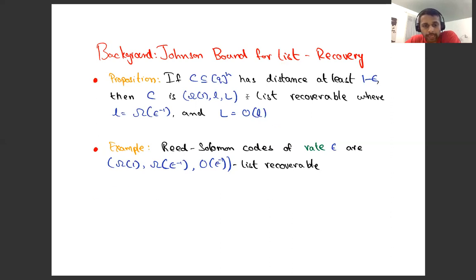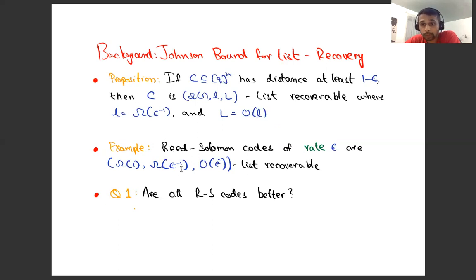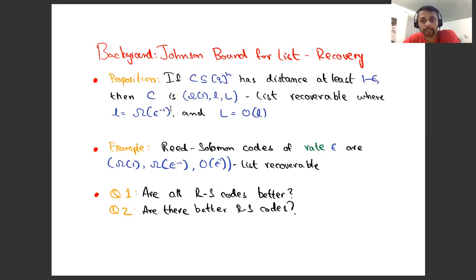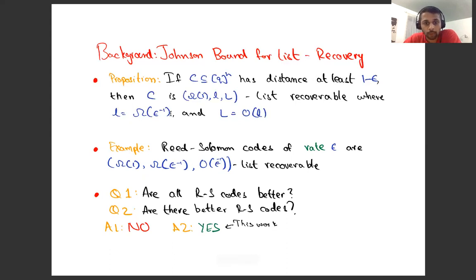Reed-Solomon codes have a lot of algebraic structure beyond what the Johnson bound uses, so an obvious question is: are all Reed-Solomon codes actually better than this? For example, can I replace 1/ε by 1/ε² for a rate-ε code? Or forget all codes — is there any Reed-Solomon code of rate ε where I can replace 1/ε by 1/ε²? A quick spoiler: the answer to the first question is no, and the answer to the second question is yes. This work mostly focuses on the second question.